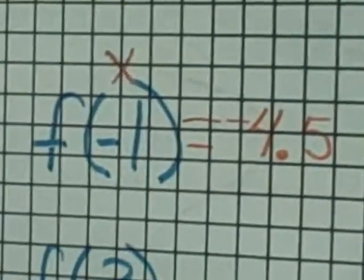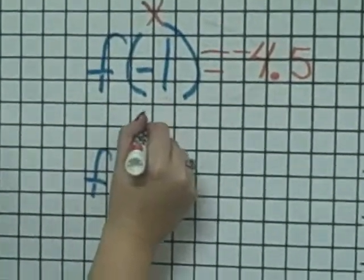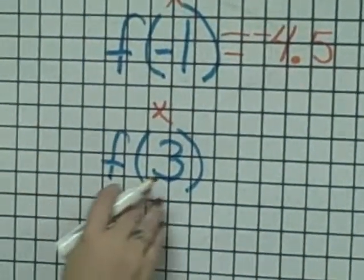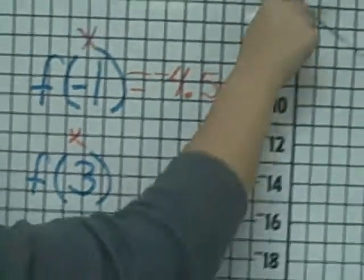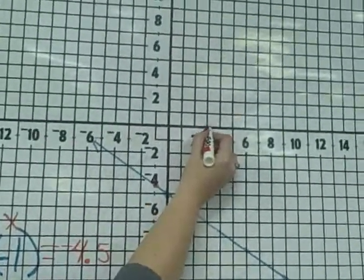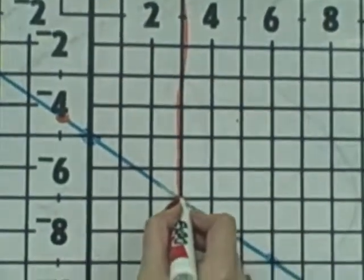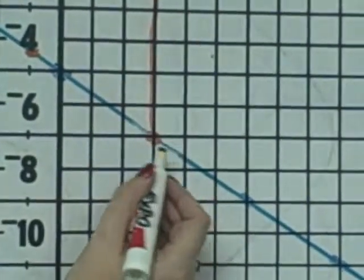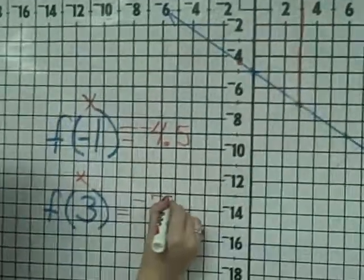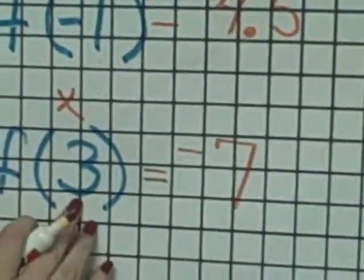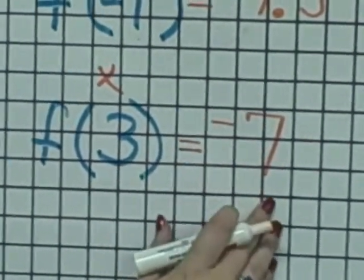Again, if we look at f of 3, the 3 is in the place where normally the x is. So we're going to go to our x-axis at 3, which would be right here. We're going to move straight down our line until we run into our blue line, and we came down 7 spots. So f of 3 would equal negative 7. This means that when x is 3, y equals negative 7.